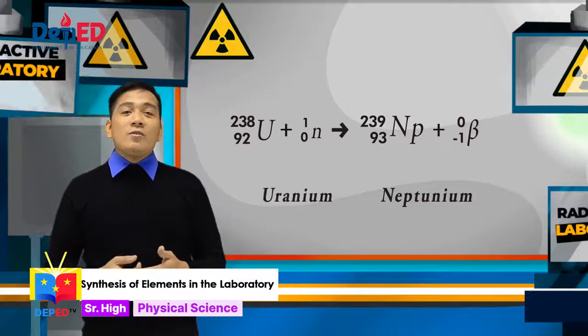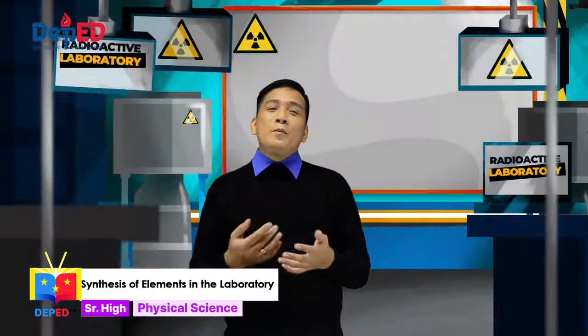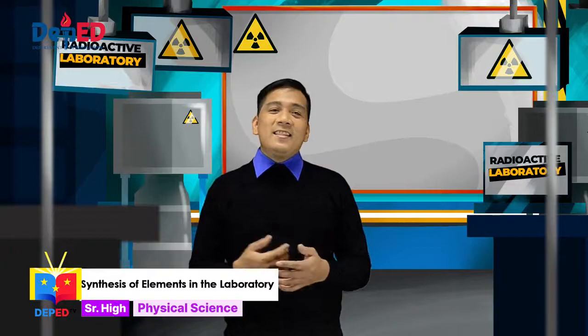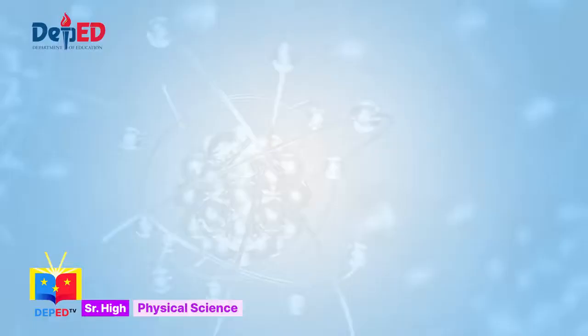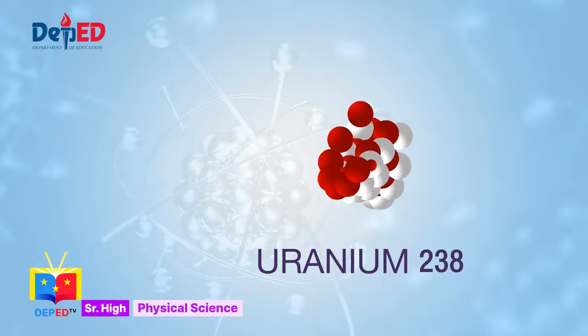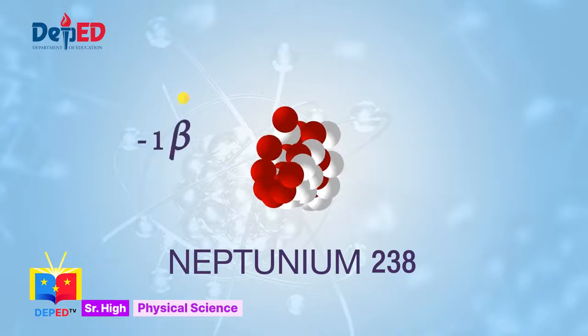If element 92 is uranium and element 93 is neptunium, what do you think did they name element 94? They named it plutonium. Plutonium was synthesized at the end of 1940 by Seaborg, Macmillan, Kennedy, and Wall. This time, they bombarded uranium with deuterons in a cyclotron. Take a look at these and see if you can figure out what happened. First, uranium was bombarded with deuterons. The proton from the deuteron attaches to the nucleus. This turns uranium into neptunium and two neutrons are released. This neptunium 238 is highly unstable. One of the neutrons will turn into a proton. This will turn the number of protons into 94. Element 94 is plutonium.